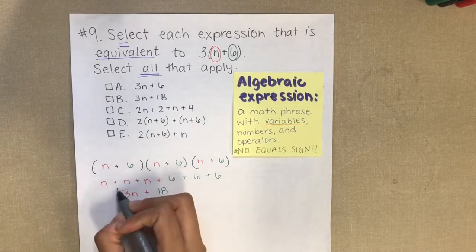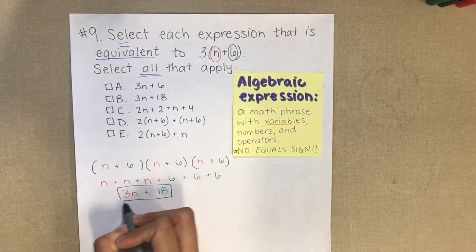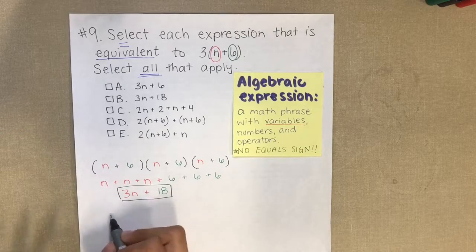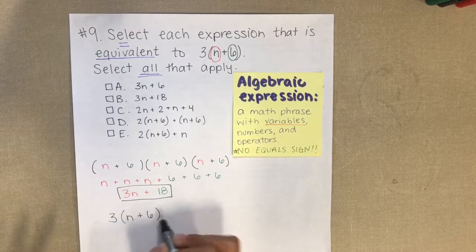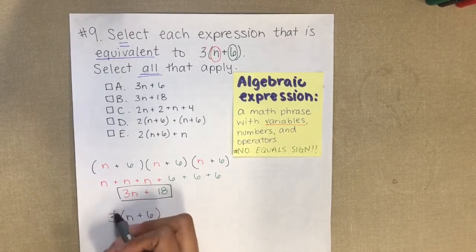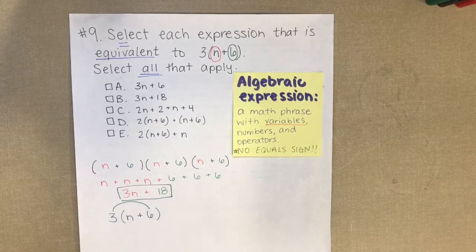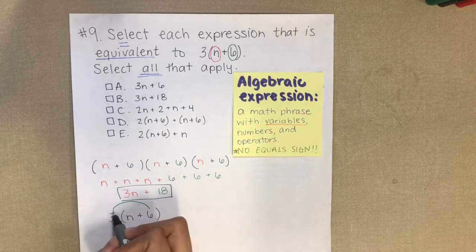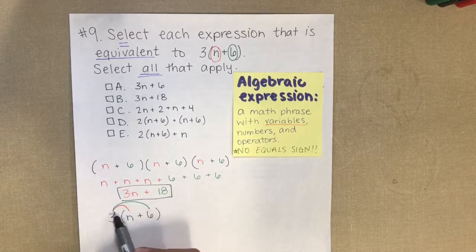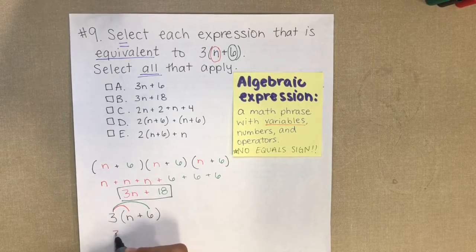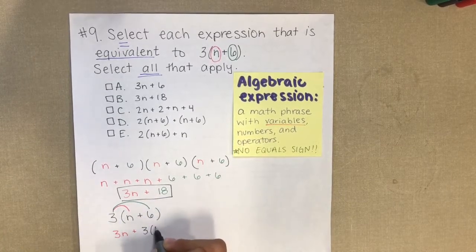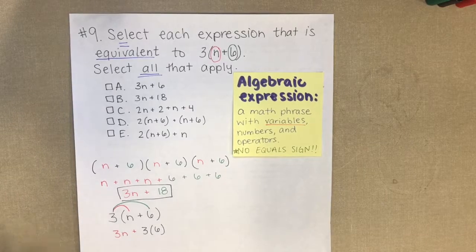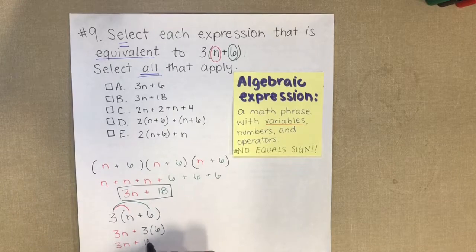So my expression is 3n plus 18. Another way to figure that out is to use the distributive property and multiply 3 times n and 3 times 6. So 3 times n gives me 3n, and 3 times 6 gives me 18 — so 3n plus 18. Same result, two different ways to solve.